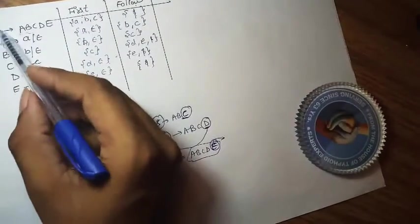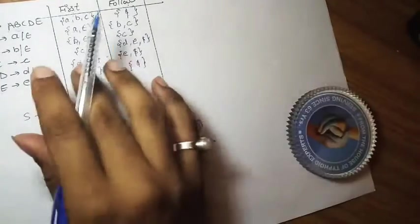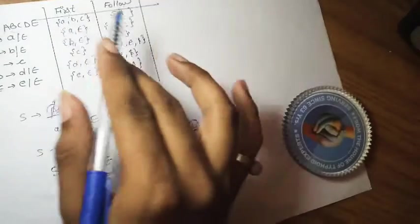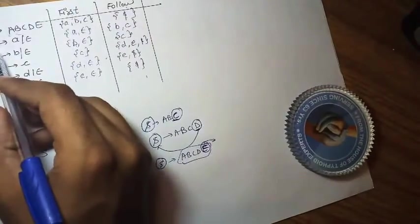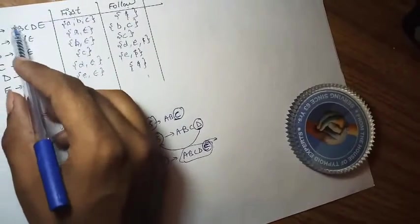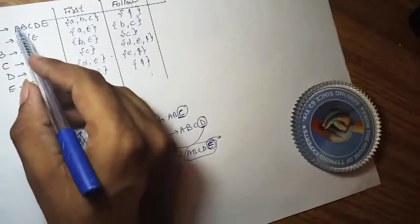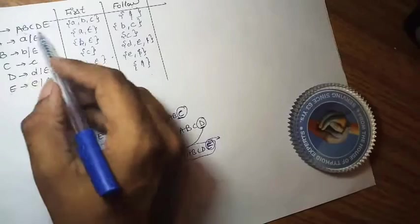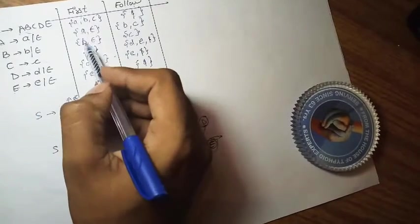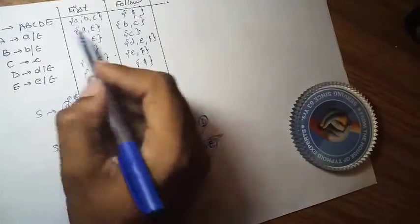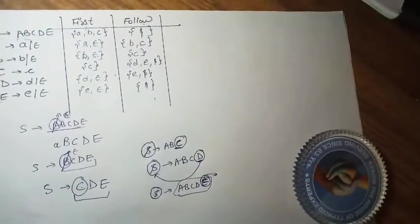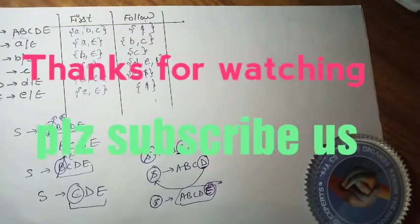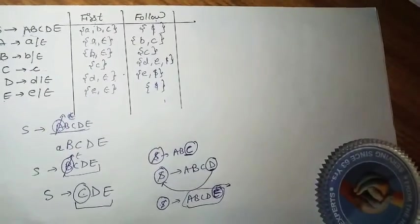In summary, we first found FIRST of all non-terminals, and then used those FIRST values to find the FOLLOW of all non-terminals. The key steps are: search for the non-terminal on the right-hand side, take FIRST of the string that follows it, and if epsilon can appear, propagate to the FOLLOW of the left-hand side symbol. I hope you enjoyed this video — please comment, share, and don't forget to subscribe. Thank you.